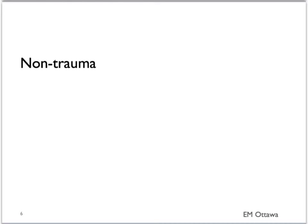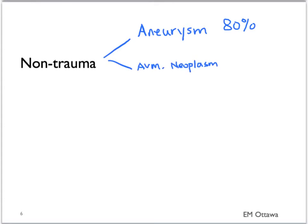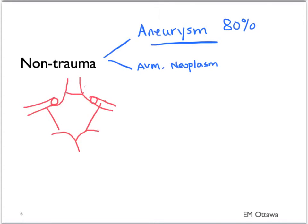For non-traumatic causes of subarachnoid hemorrhage, most will be due to rupture of an aneurysm. Minor causes include ruptured AVM and neoplasms. We will therefore focus on aneurysmal subarachnoid hemorrhage. Aneurysms are most often found in the circle of Willis, formed by the anterior cerebral arteries, middle cerebral arteries, posterior cerebral arteries, and the communicating arteries.